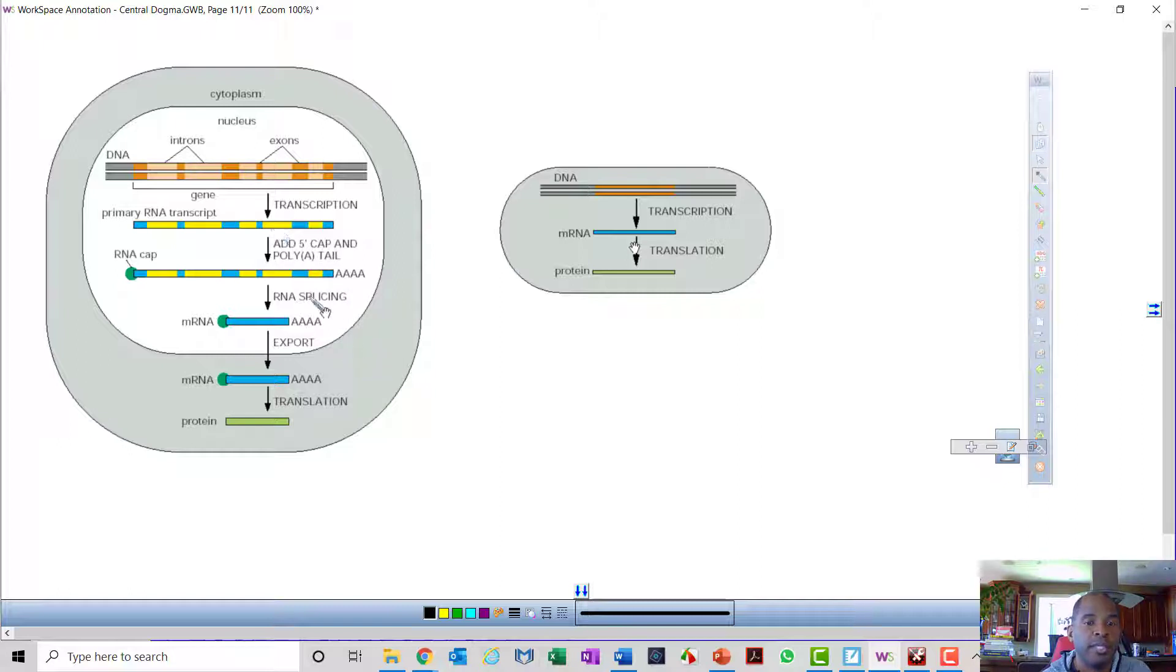We have this transcript processing, and out to the cytoplasm for translation. In a prokaryote, however, the lack of the nucleus allows the DNA to be transcribed immediately into mRNA without any transcripts, and then that in turn is translated into the protein. So the prokaryotic process is far simpler than the eukaryotic process. You should be aware of that difference.